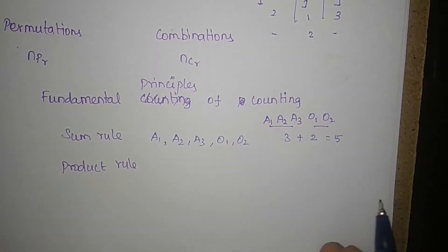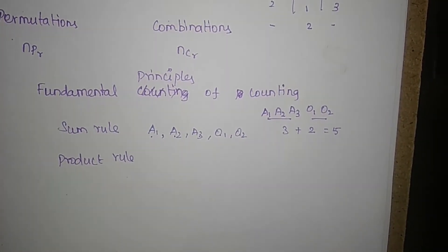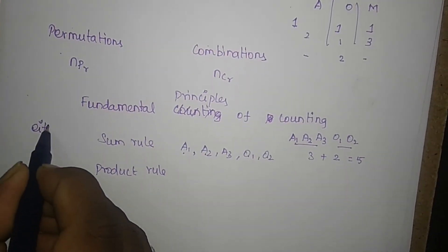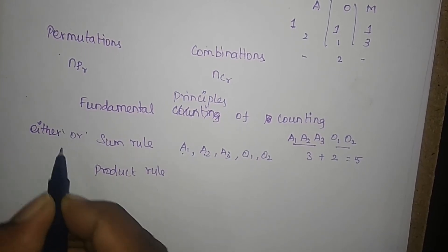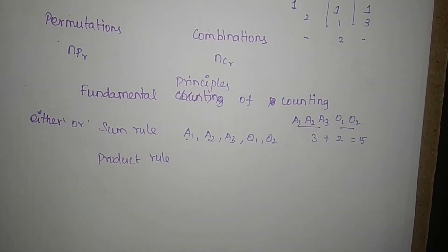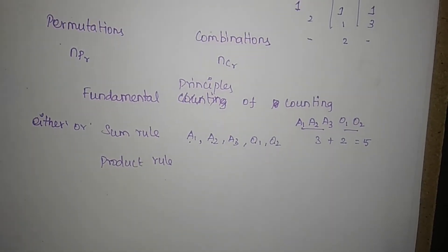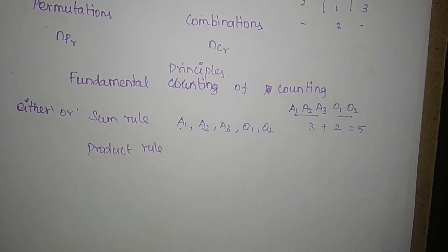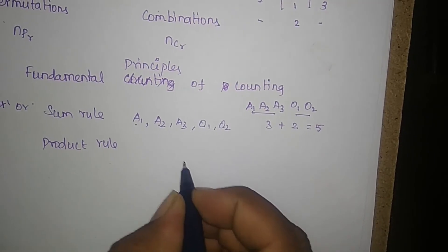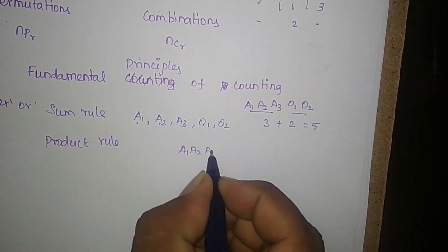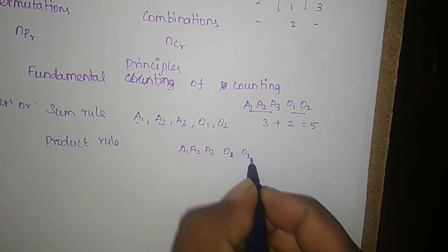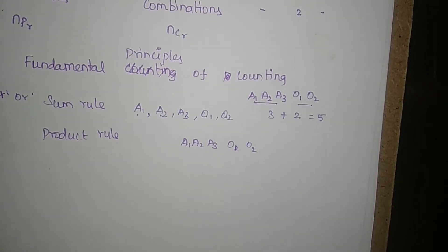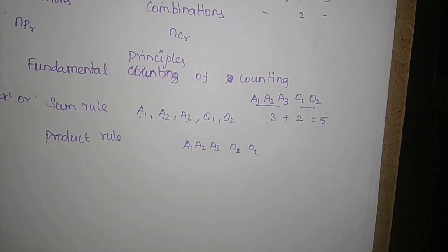So 5 is the total — 1, 2, 3, 4, 5. That is the sum rule. Either apple or orange — that is the sum rule. Now for the product rule: there are three kinds of apples and two oranges.